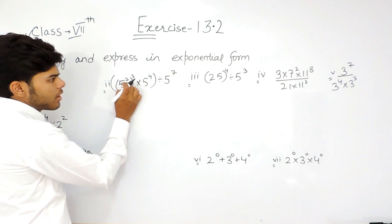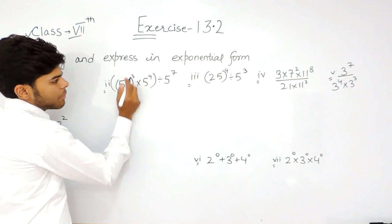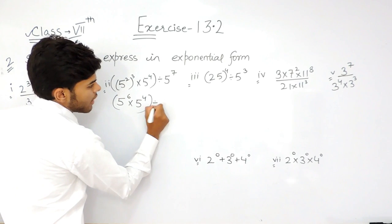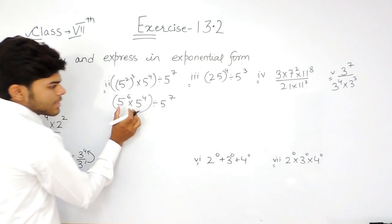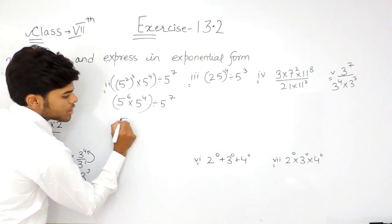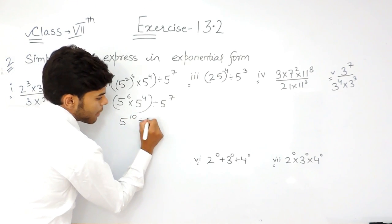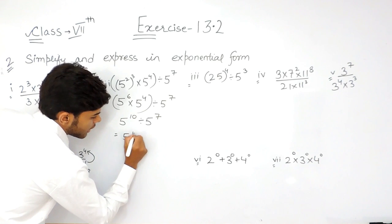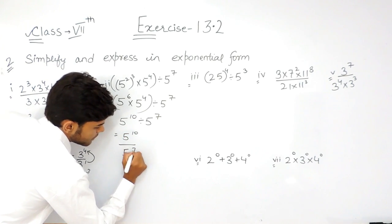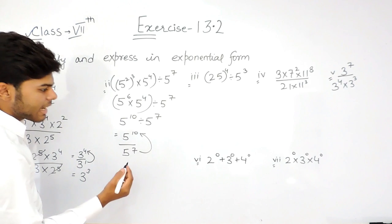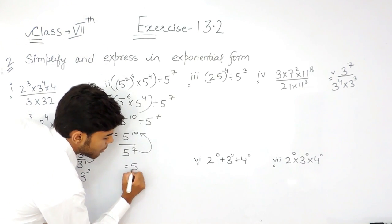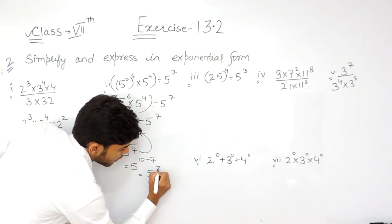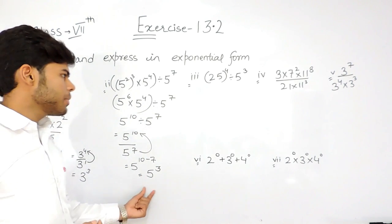This one can be written as 5 to the power 6 multiplied with 5 to the power 4, whole divided by 5 to the power 7. Same base, power gets added up. So this becomes 5 to the power 10 divided by 5 to the power 7. We can write this like 5 to the power 10 upon 5 to the power 7. This will go in the numerator and its sign changes, so it will be 5 to the power 10 minus 7, or we can say that it will be 5 to the power 3. So this will be the answer.